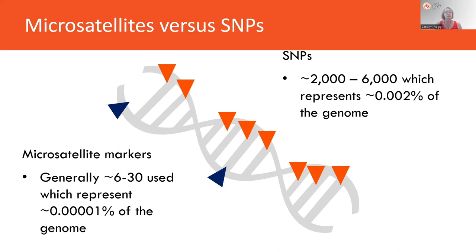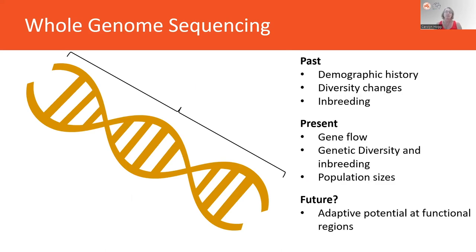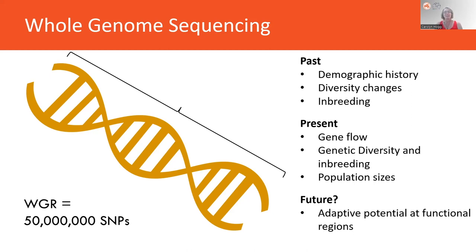Whole genome sequencing is exactly what it sounds — sequencing the entire genome. It allows us to look at past demographic histories, diversity changes, and inbreeding. We can examine present gene flow, genetic diversity, inbreeding within populations, and different population sizes, and use that information to predict adaptive potential at functional gene regions. When using whole genome sequencing data, we tend to use about 50 million SNPs in those data sets.